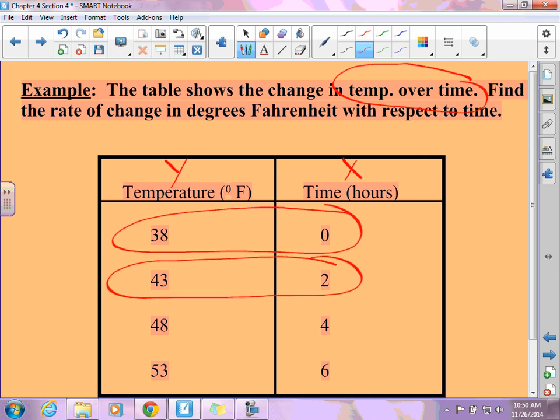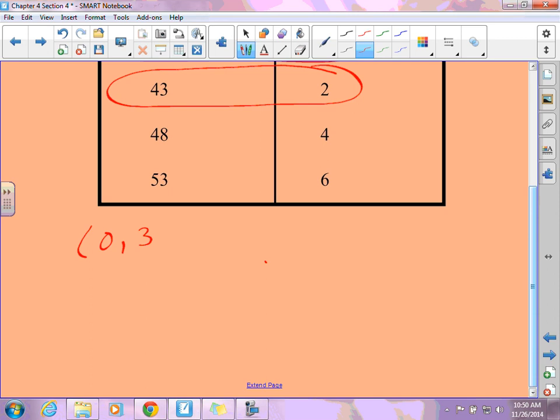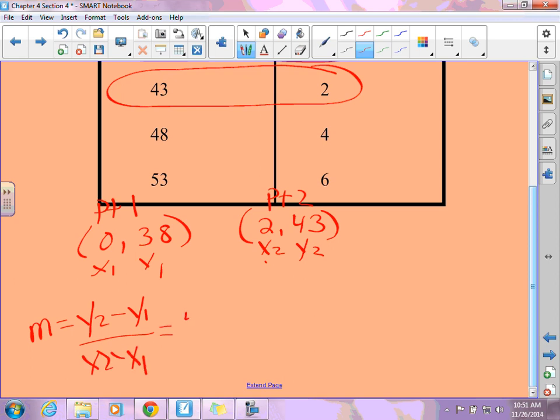And what you're going to do is you're going to rewrite the ordered pairs. So I'm going to write 0, 38 for one of my ordered pairs. And the other one is going to be 2, 43. Because it's got to be XY. So then this is point 1. This is point 2. X1, Y1. X2, Y2. M equals Y2 minus Y1 over X2 minus X1.